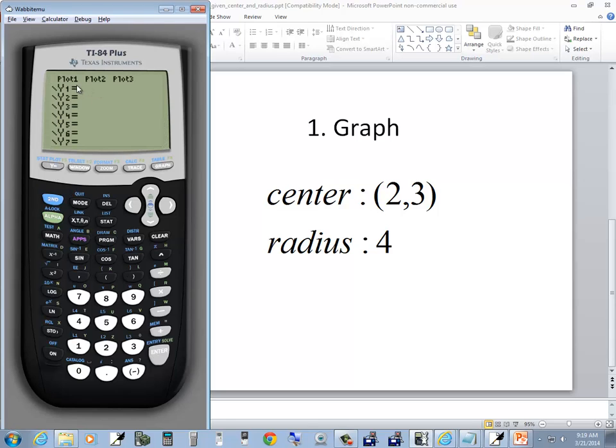Go to your y equals in your calculator. Make sure you don't have anything here. So if you have anything on y1 or y2, press clear. You're going to clear those out. Those will be gone.